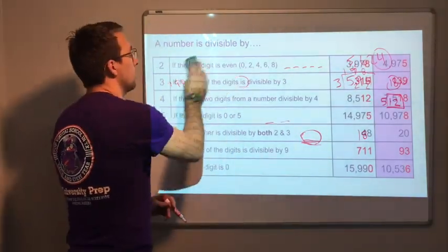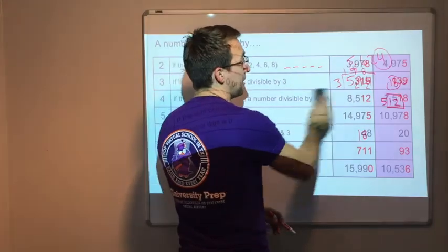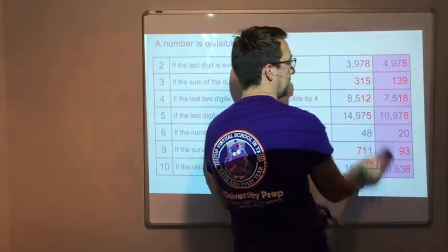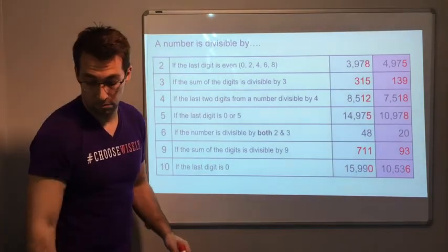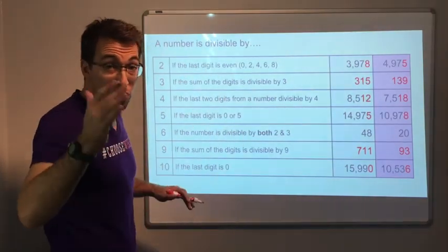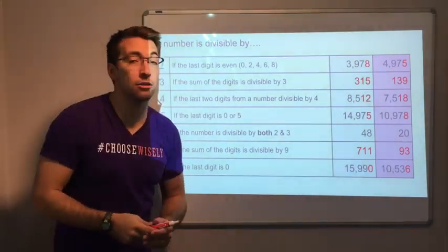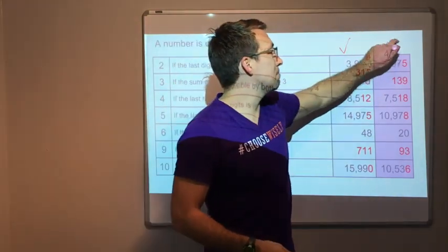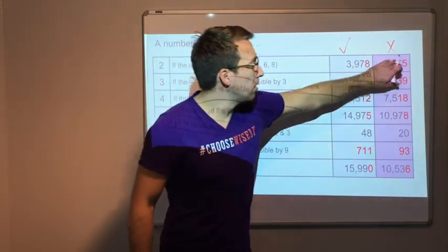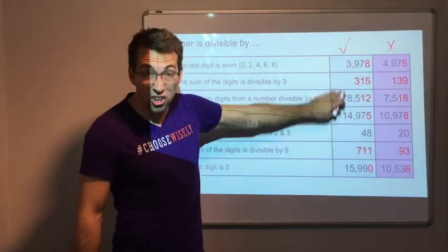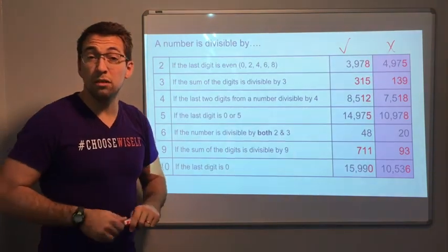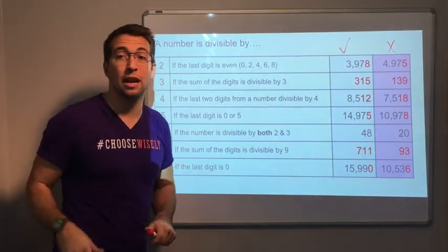So check this out. Here are some examples, some more examples of each number. Remember that this is a video, so you can pause it. You can work all this math out yourself. This column is good. This column is bad. They're not divisible because of the rules. In this column they are divisible because of the rules. So I'll leave you to it. You can check it on your scratch paper with your calculator.